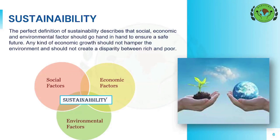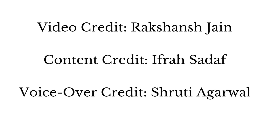So we have understood that sustainable development means growth must be accomplished with respect of nature and humankind. Sustainability is achieved at the crossroads of social, economic and environmental factors. These factors must go hand in hand to ensure a safe future. Any kind of economic growth should not hamper the environment and should not create a disparity between the rich and poor. I hope the concept is crystal clear now. If you still have any doubts, please feel free to comment. And for more detailed notes, please visit our website. Thank you.